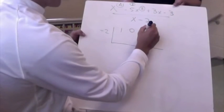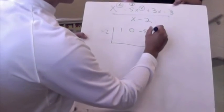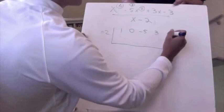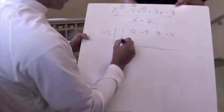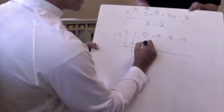Then we go to our negative 5, because that's our squared power. Then our constant is a positive 3, and our remainder is a negative 3. So that's our format. Dropping down the 1, 2 times 1 is 2, we get a 2.